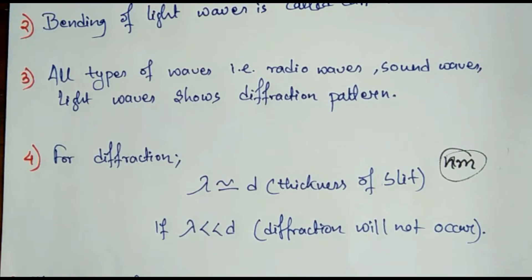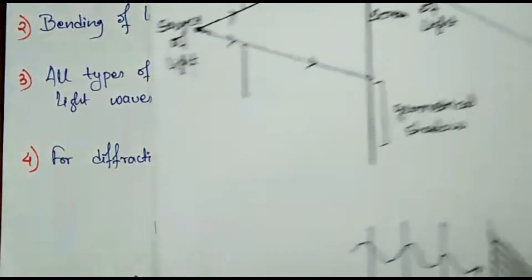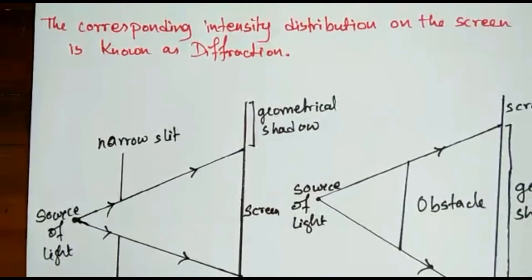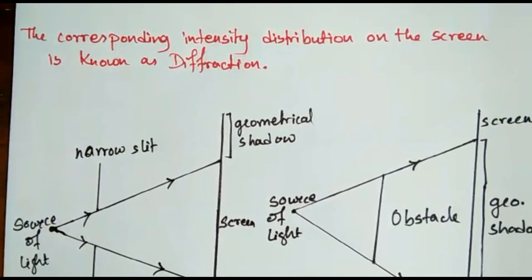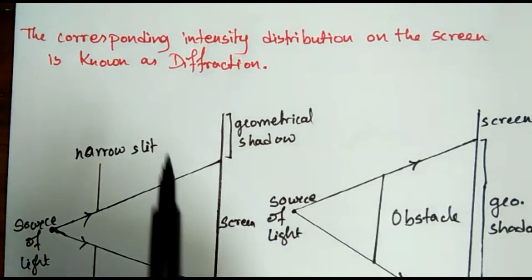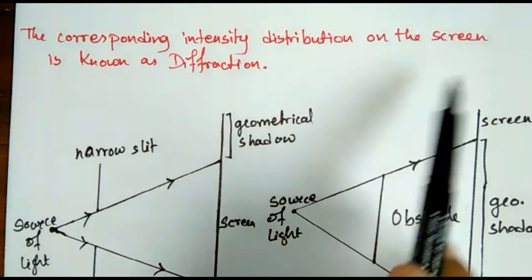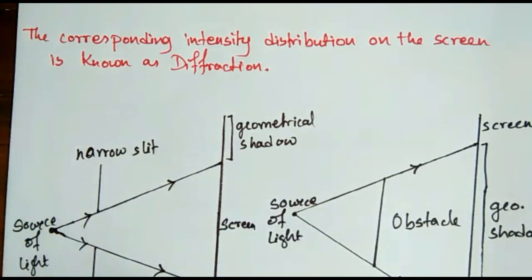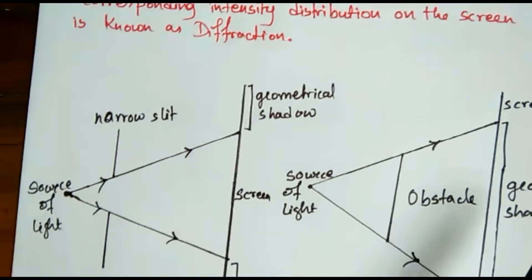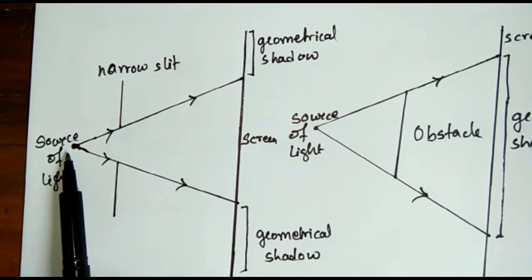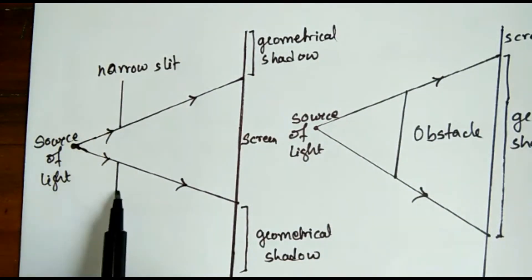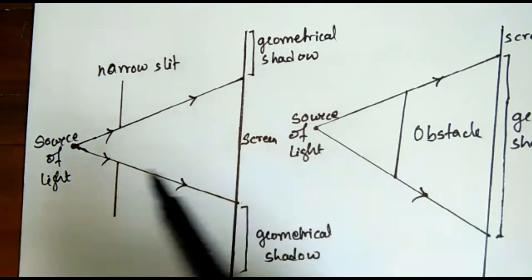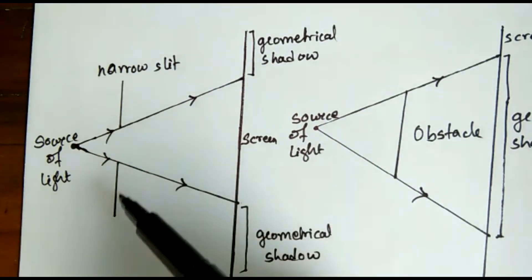Let me show you the graphical representation of the diffraction of light through an obstacle. The corresponding intensity distribution on the screen is known as diffraction. This is the intensity distribution pattern. This is the source of light, and when you pass the source of light through a narrow slit, it falls on the screen and spreads in this manner.